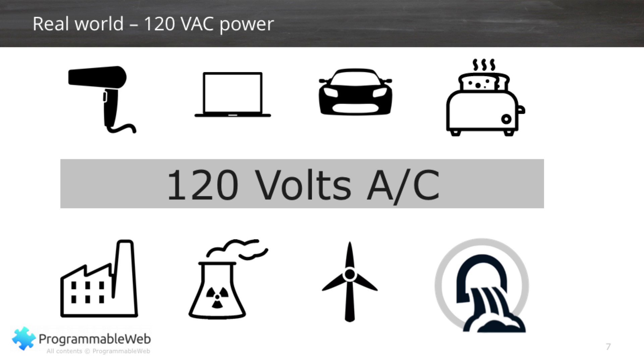On the other side of the wall socket is the provider of the service — the electric utility. Here's where the flexibility comes in. That electricity can be delivered from a coal burning plant, from a nuclear plant, from wind, from hydroelectric — it doesn't matter, so long as it's delivering power to the wall socket in a way that conforms to the contract. The consumers don't know and don't care. We call this decoupling. We're separating the concerns of the consumers and the providers in a way that they don't have to know a whole lot about each other. They just have to conform to the contract in the middle.